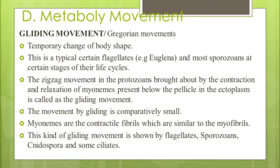The fourth type of locomotory method in Protozoa is metabolic movement, also known as gliding movement or gregarine movement. It involves temporary changes of body shape and is typical of certain flagellates — mostly Euglena — and some sporozoans at certain stages of their life cycles. The zigzag movement in protozoans brought about by the contraction and relaxation of myonemes present below the pellicle in the ectoplasm is called gliding movement. Myonemes are contractile fibrils similar to myofibrils. This kind of gliding movement is shown by flagellates, sporozoans, Nosema, and some ciliates.